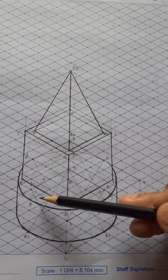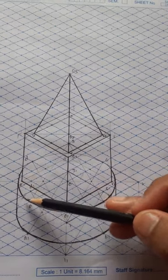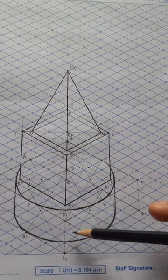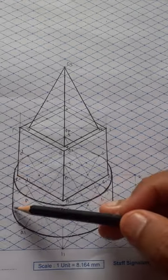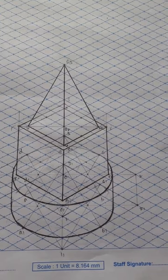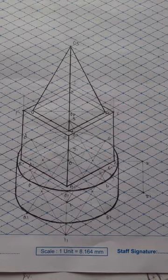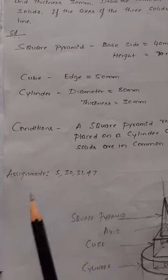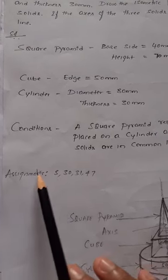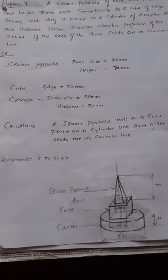For the cylinder, the top face is visible only up to where it touches the cube. The front face visible to the observer and the tangents to the base and top face ellipses are shown. This completes the isometric projection of the combination of three solids. Try assignment problems 5, 30, 31, and 42 — any two of the four — and send your work. Thank you for watching.